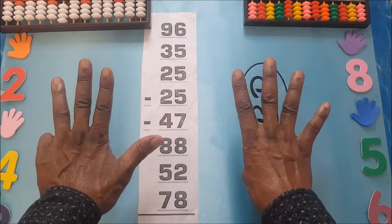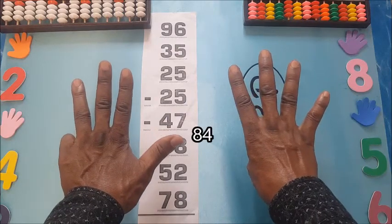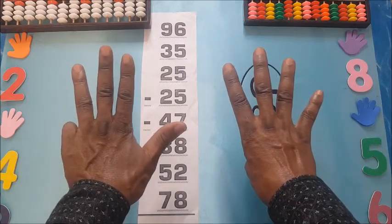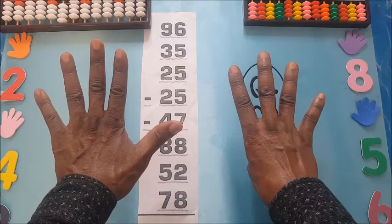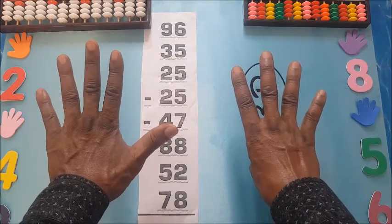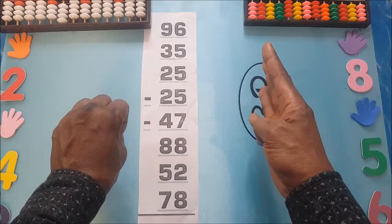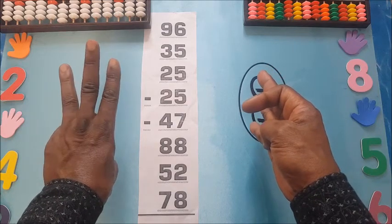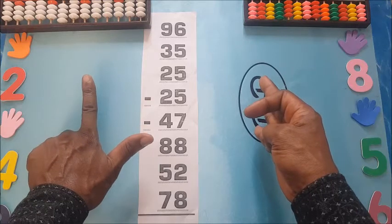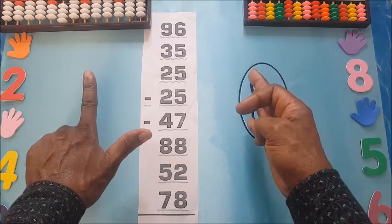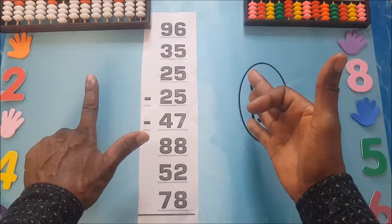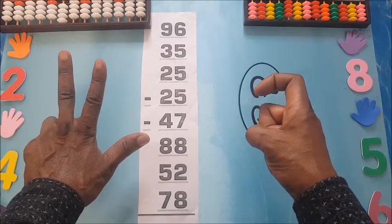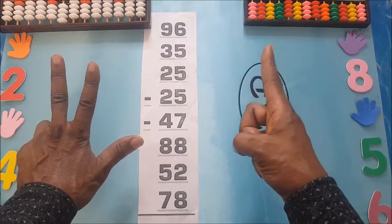The answer is 84. Now 84 plus 88: 10, 20, 30, 40, 50, 60, 70, 80, plus 8 — we have 5, 6, 7, 8.